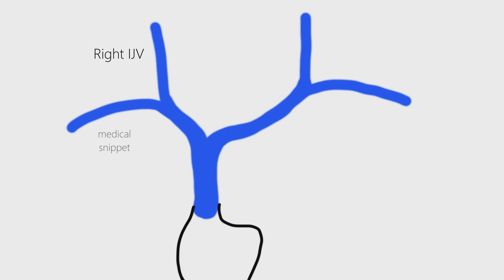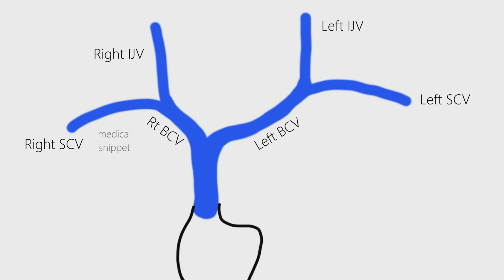Right internal jugular vein and the right subclavian vein join to form the right brachiocephalic vein. Similarly, the left brachiocephalic vein is formed by the union of the left internal jugular vein and the left subclavian vein. Right and left brachiocephalic veins combine to form the superior vena cava, which then drains into the right atrium.